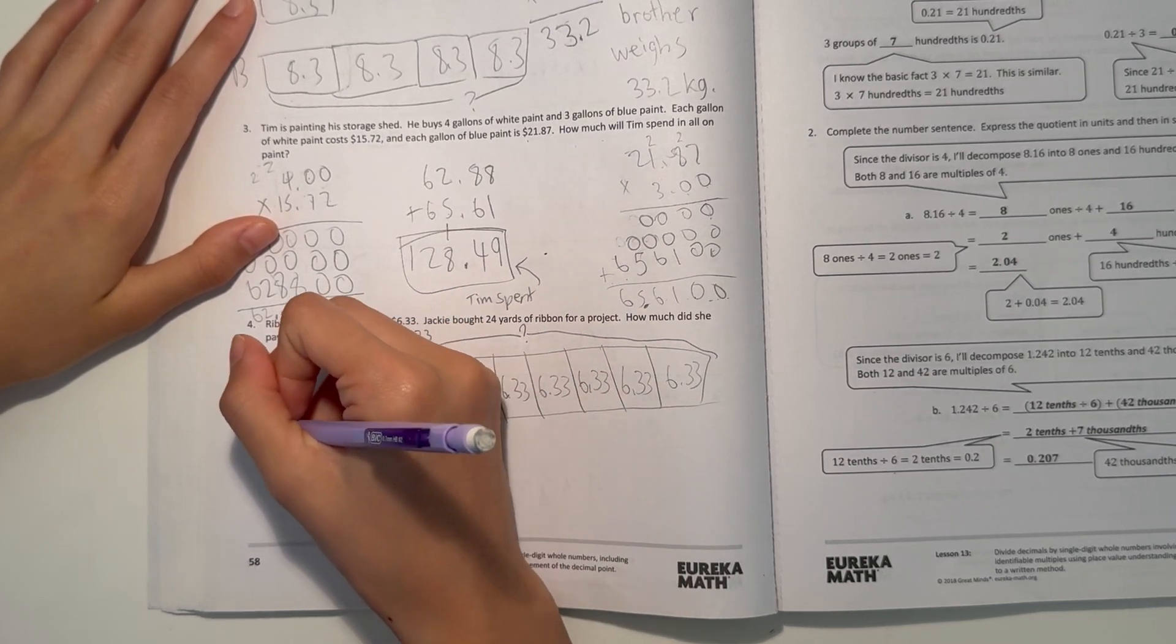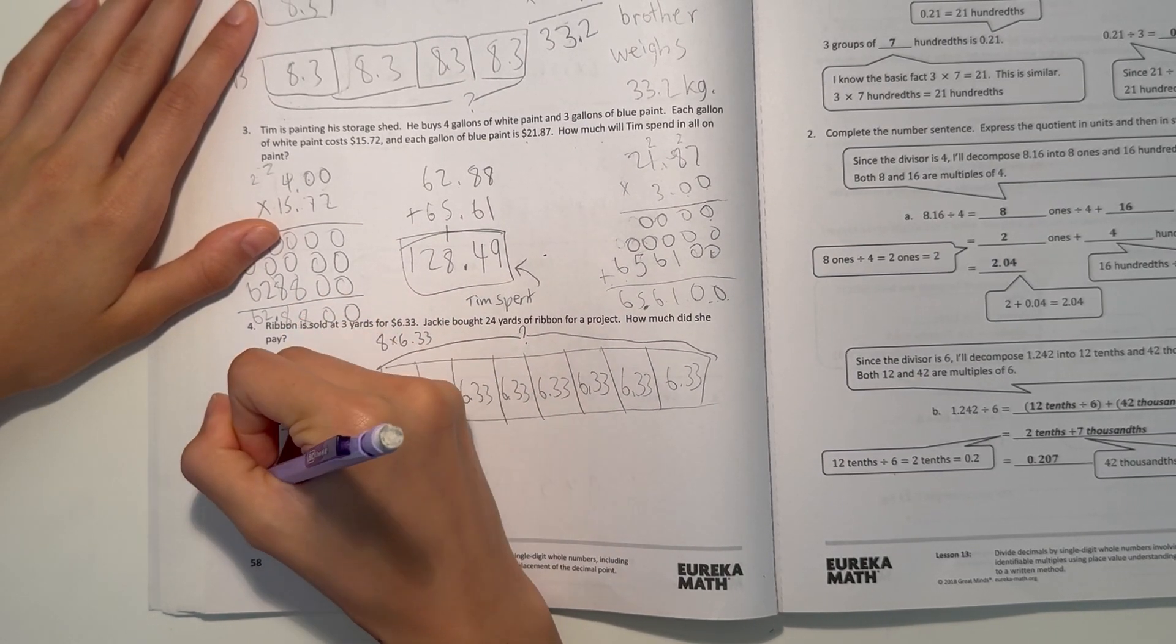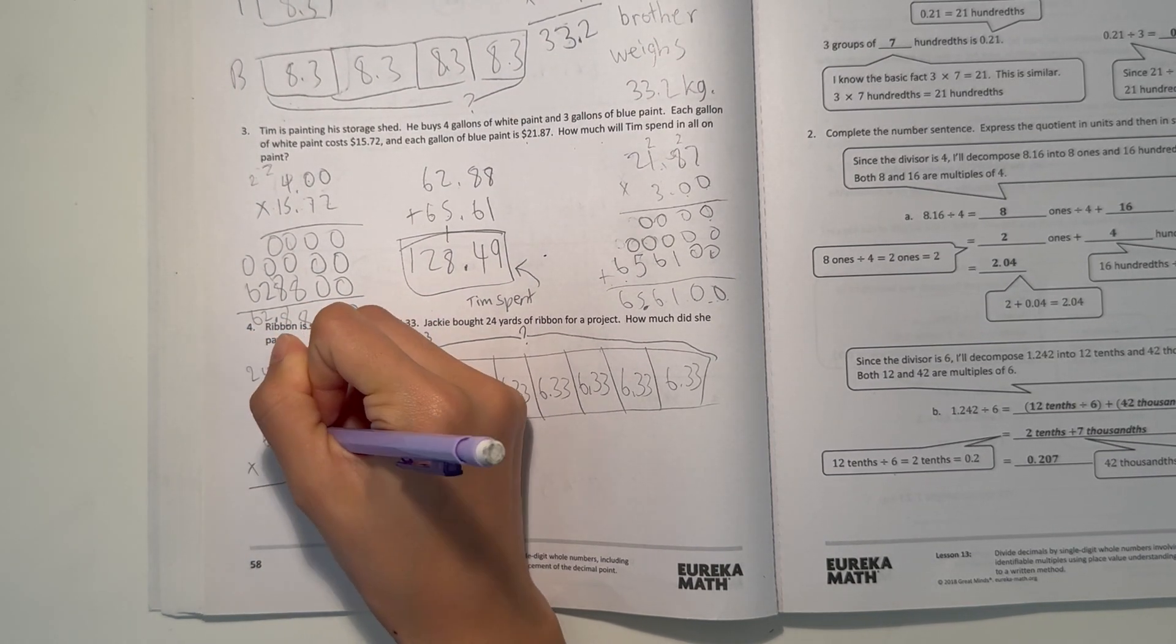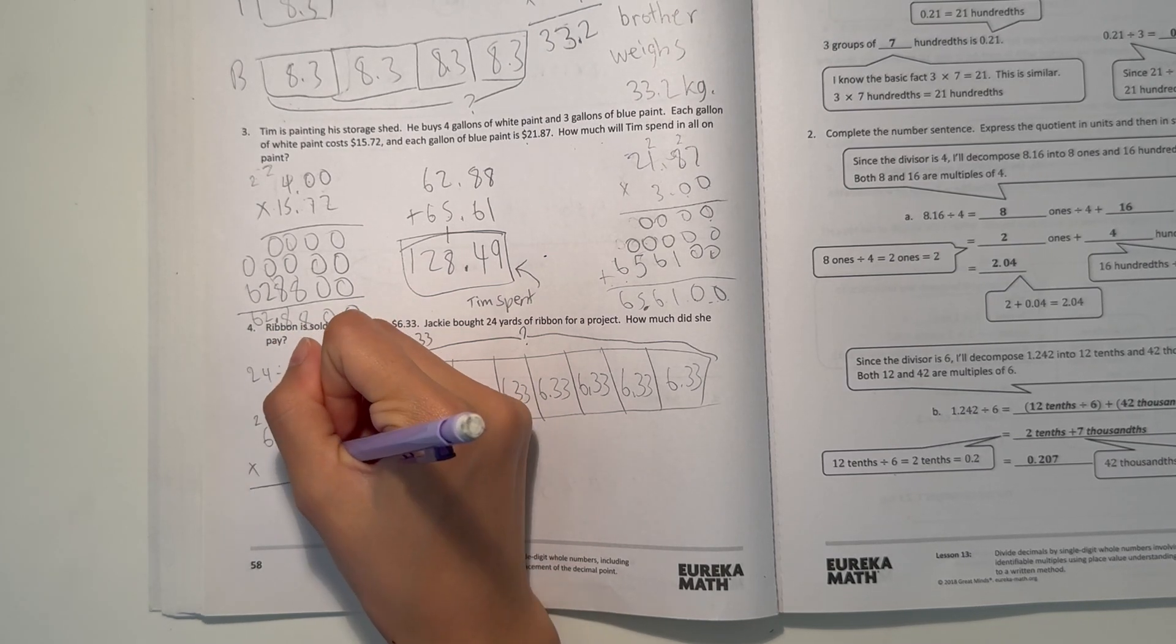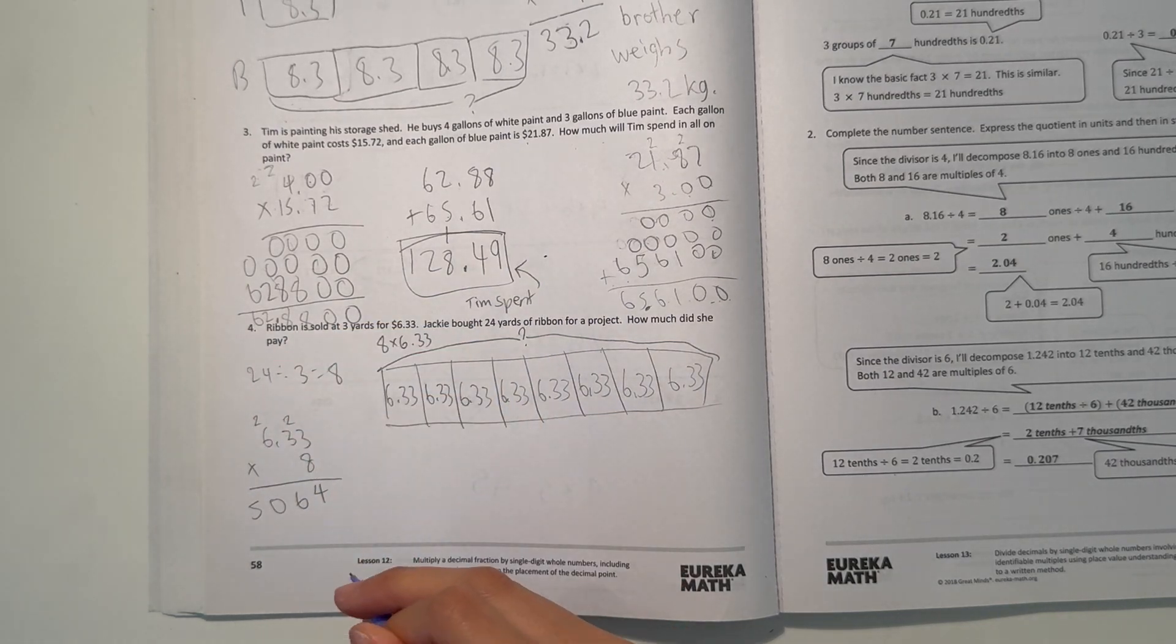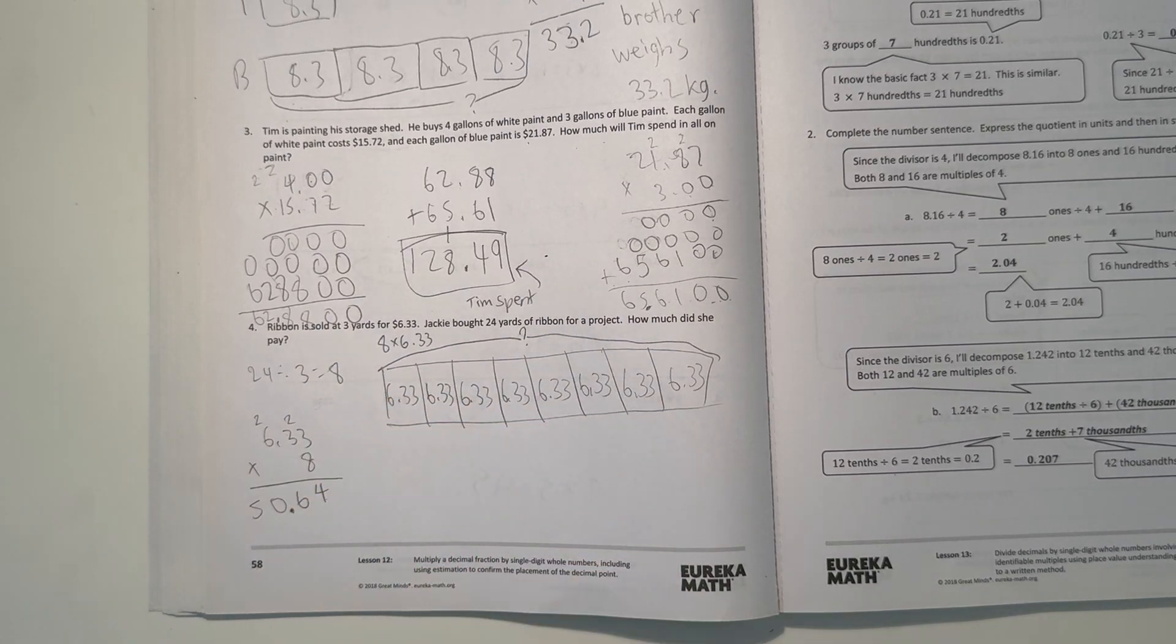So let's do 8 times 6.33. Let's see. 3 times 8 is 24. 3 times 8 is 24. 3 times 8 is 24 plus 2 is 26. And 6 times 8 is 48 plus 2 is 50. And move the decimal place two times. So our answer is 50.64.